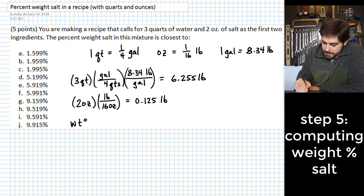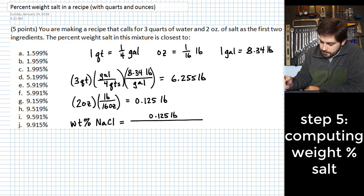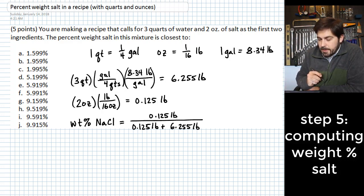And the weight percent of salt, and I'll just say that's NaCl, is equal to the amount of salt that we have divided by the total amount of the weight of the mixture. And so this would be 0.125 pounds over the sum of the two. So 0.125 pounds plus 6.255 pounds. And then a lot of folks like to multiply this by 100% so that it is expressed with that percent unit there on the end.